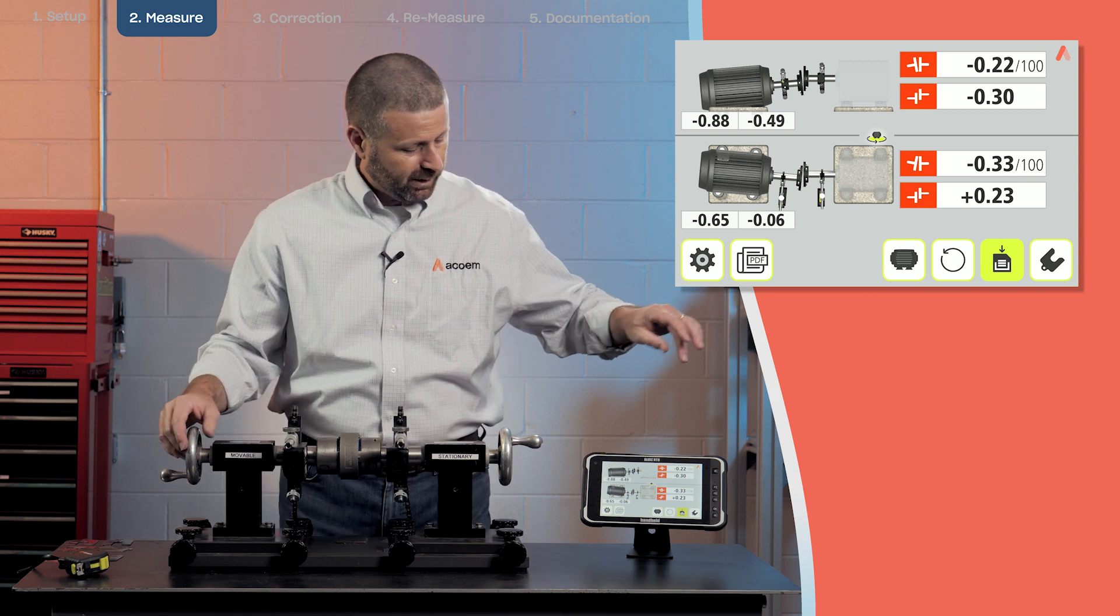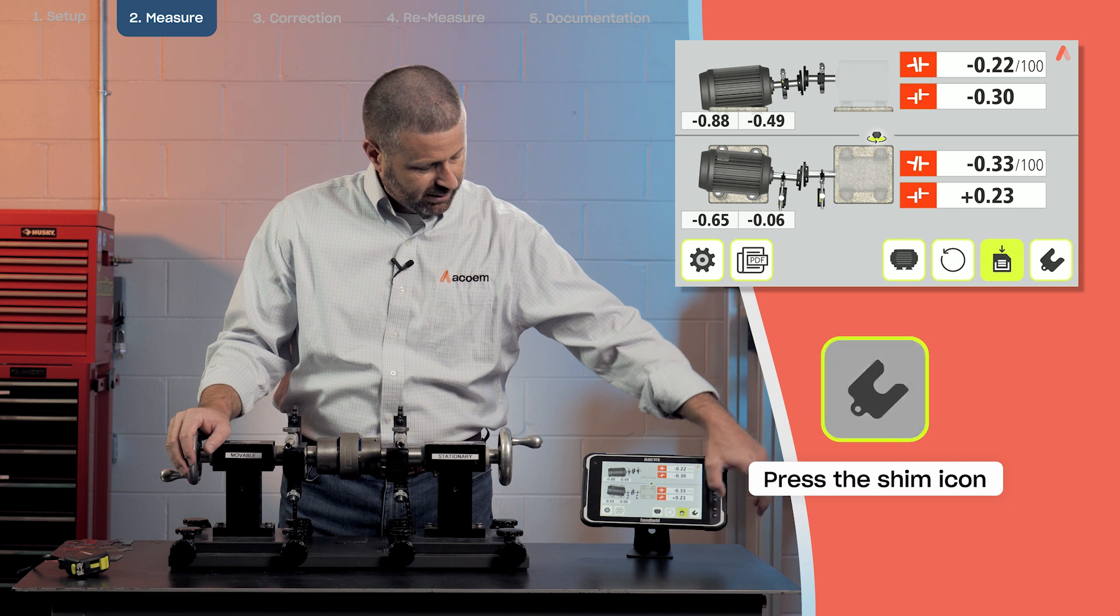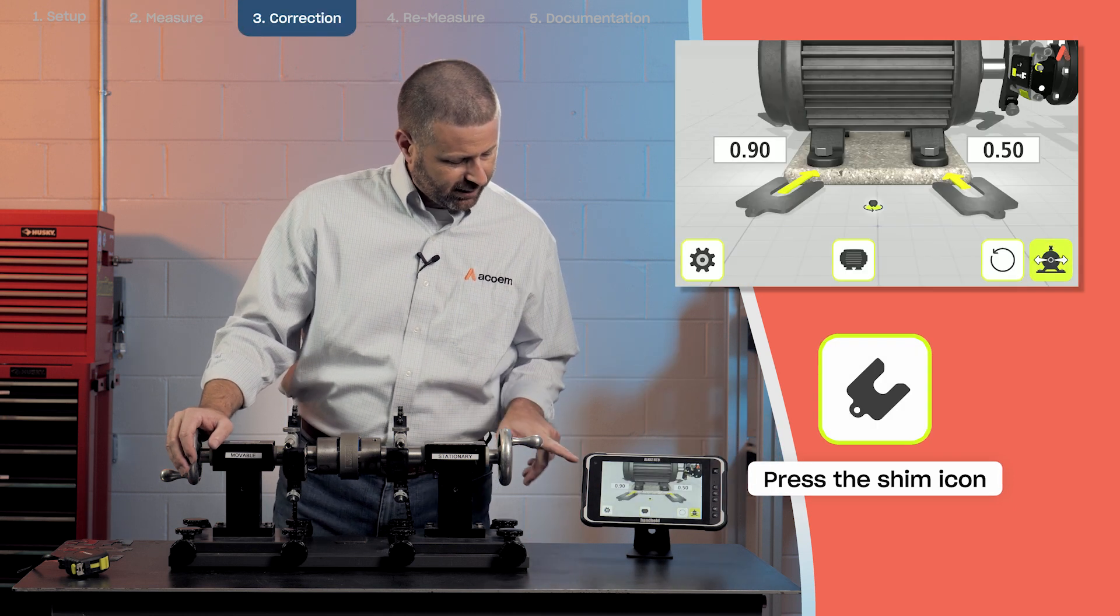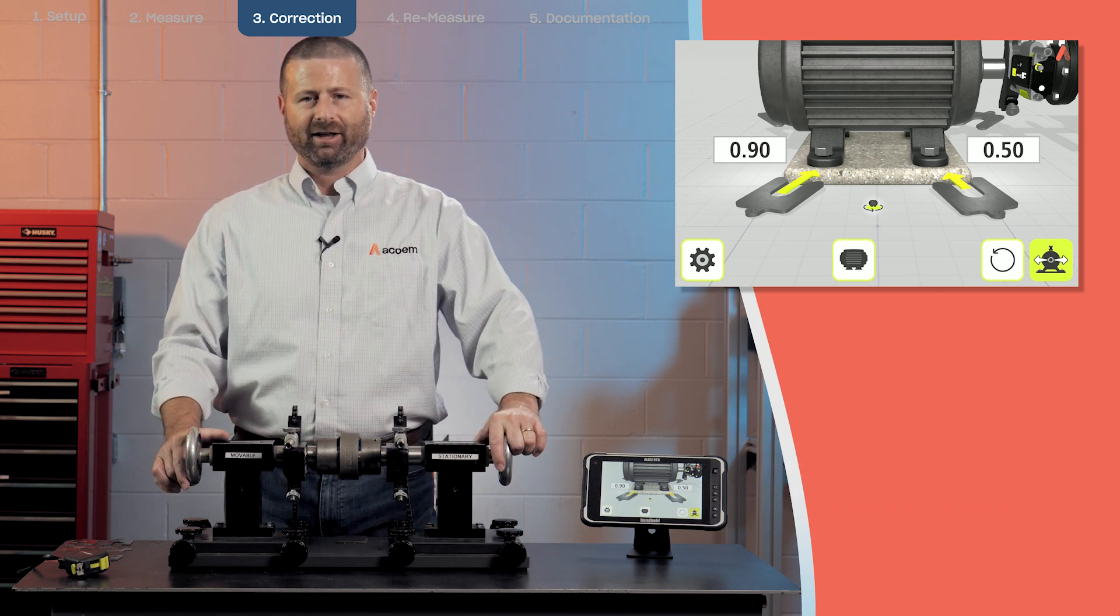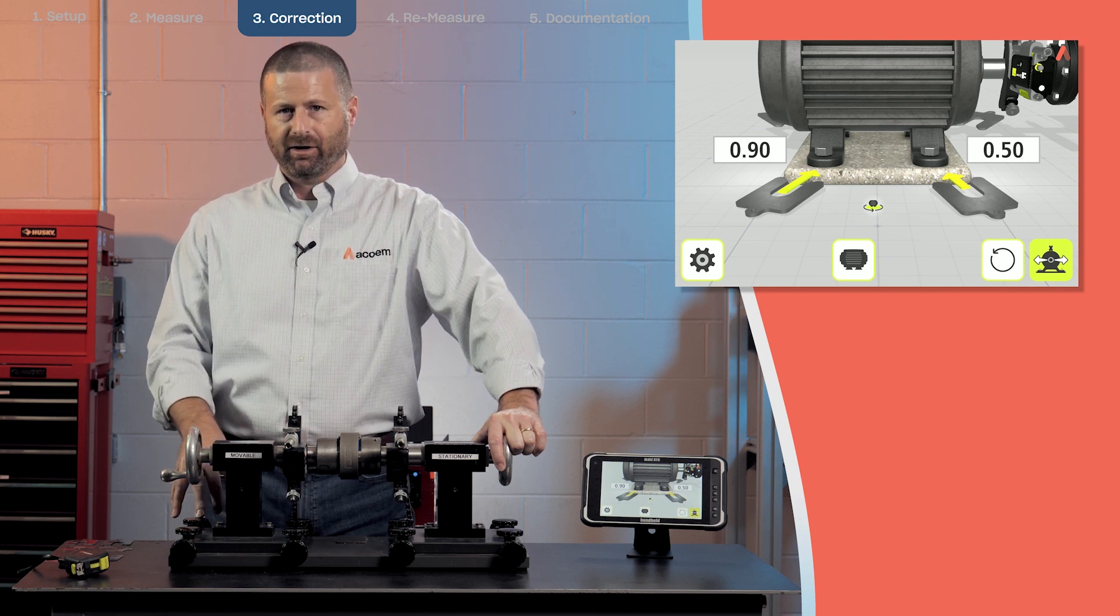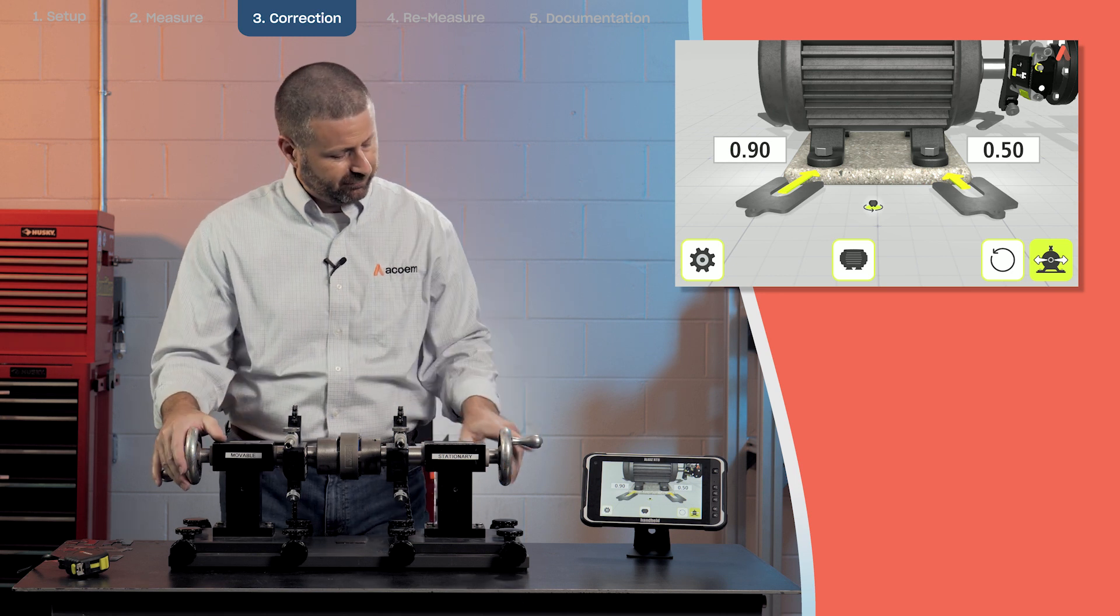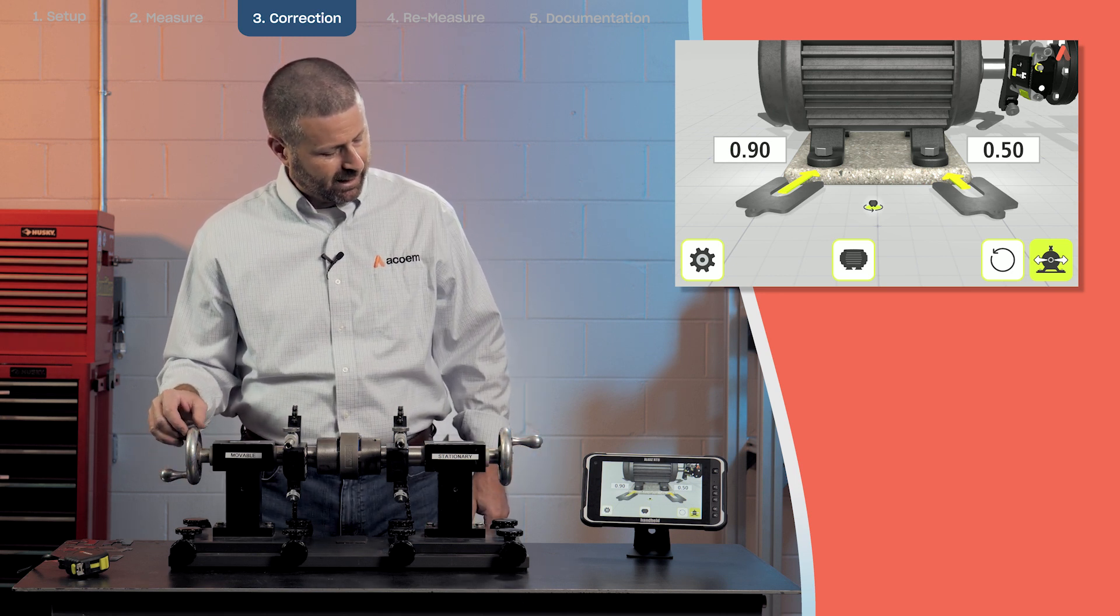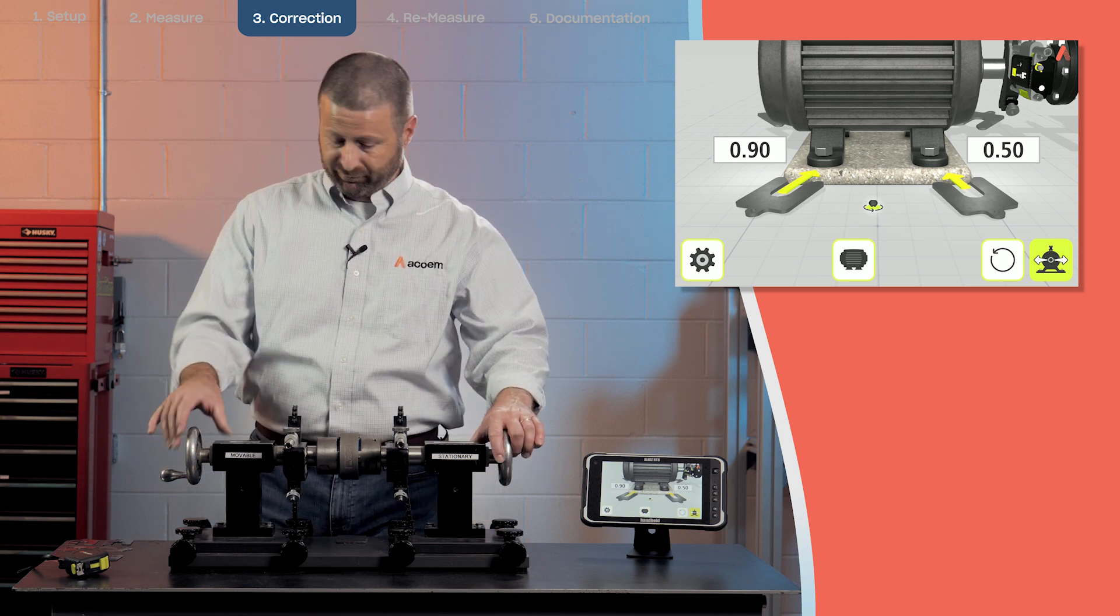I've got some shims prepped to make this adjustment here. We hit the shim icon and it draws us a picture of exactly how much shim to add or remove from the front feet and the rear feet. You do the same thing to both rear feet and the same thing to both front feet. In this case, I need to add 0.9 in the back and add 0.5 in the front.